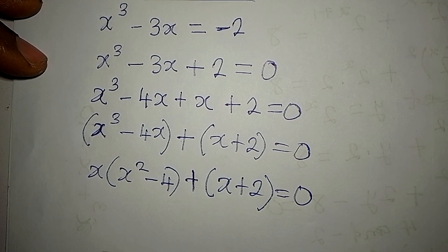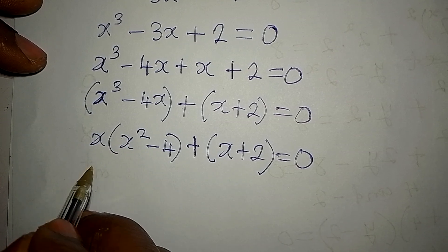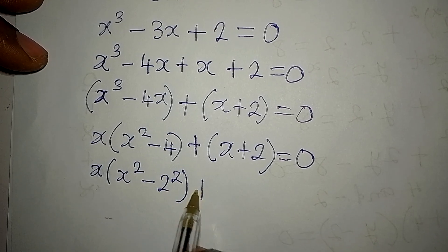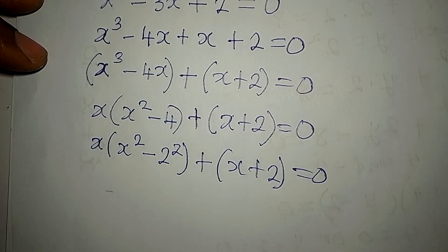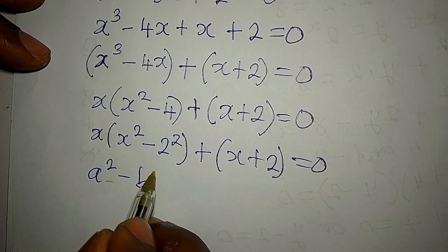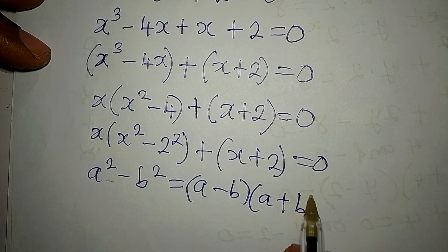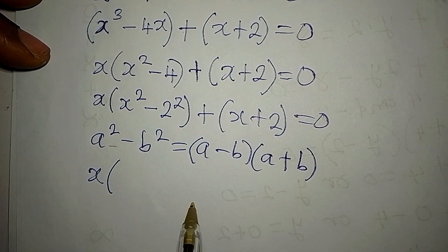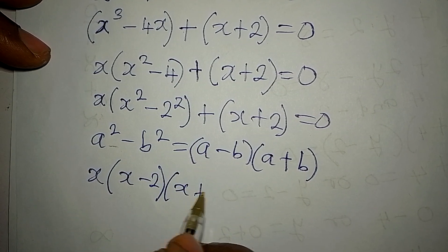From the inside, we can express x squared minus 4 as a difference of two squares. We have x(x squared minus 2 squared) plus (x plus 2), equal to zero. The difference of two squares rule states a squared minus b squared equals (a minus b)(a plus b), so we apply this: x(x minus 2)(x plus 2) plus (x plus 2) equals zero.